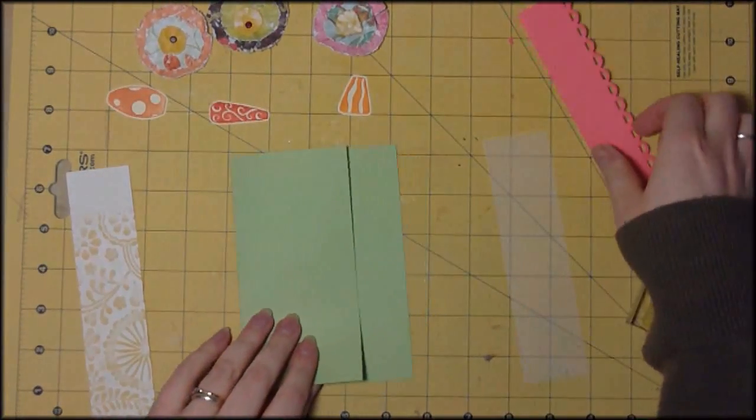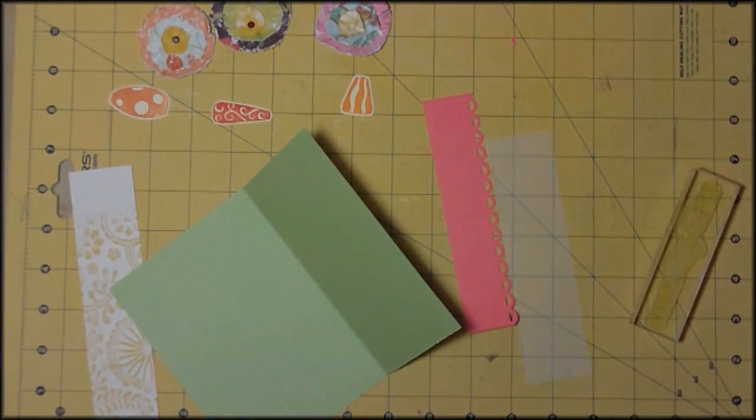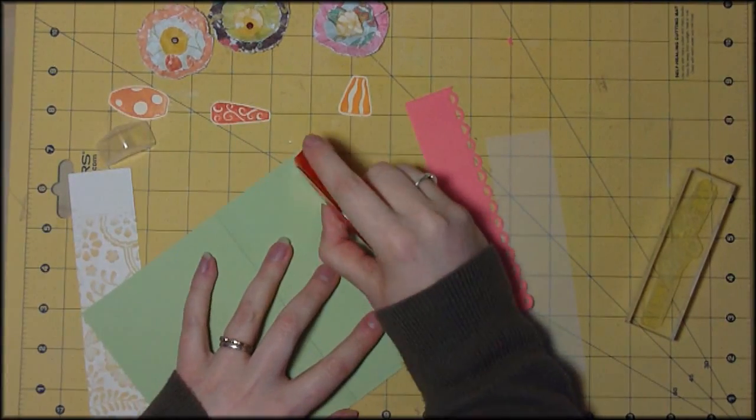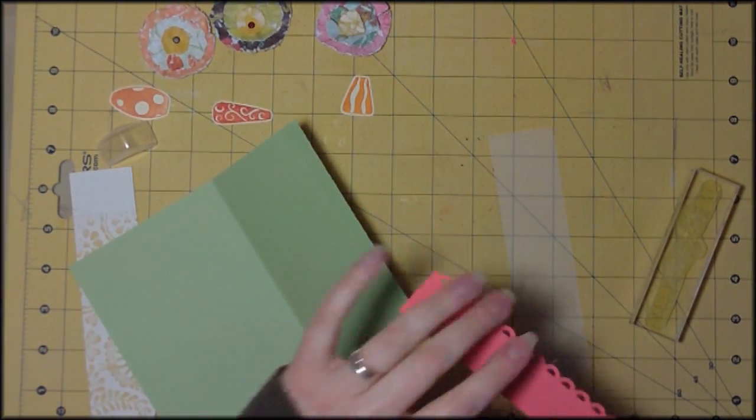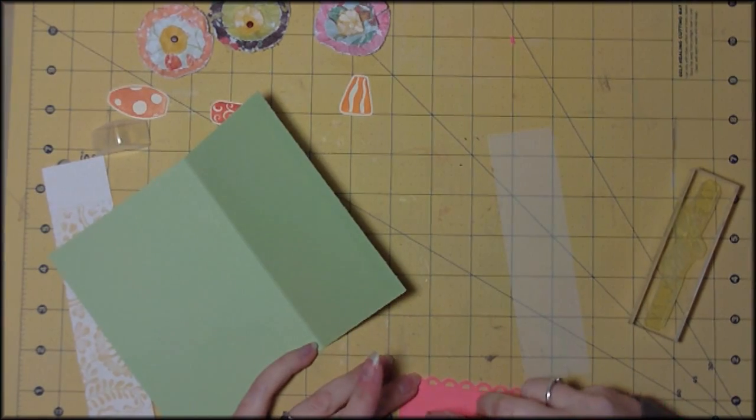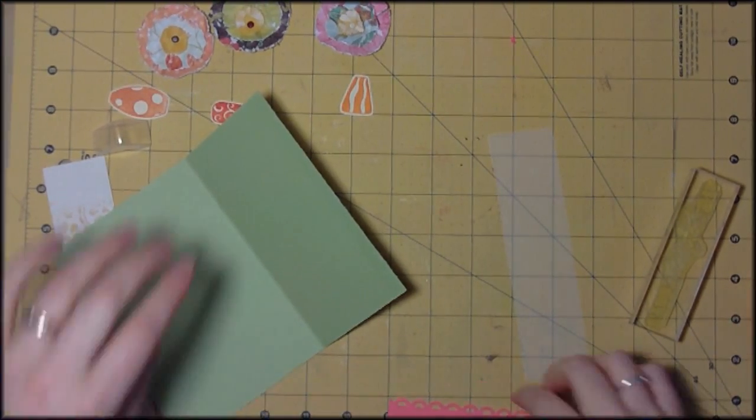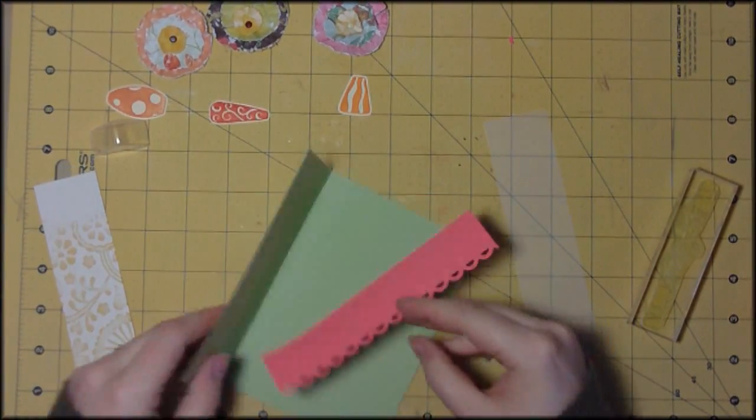So I've just chopped the first inch and a half off the bottom of the front of my base card. I'm just going to run some tape runner along here and adhere that scallop down at the front end to the card. So literally just the scallop part of the border is poking through.